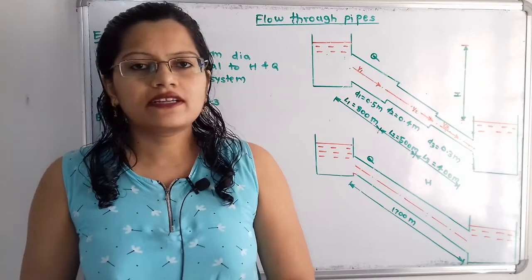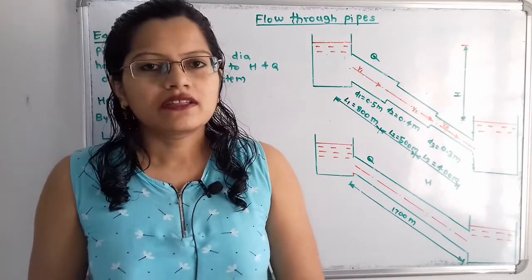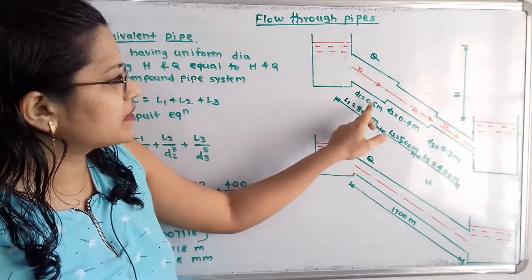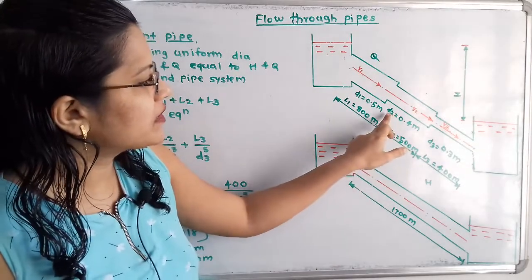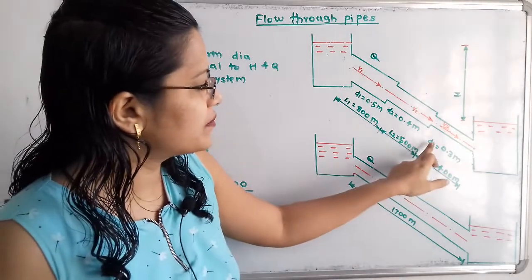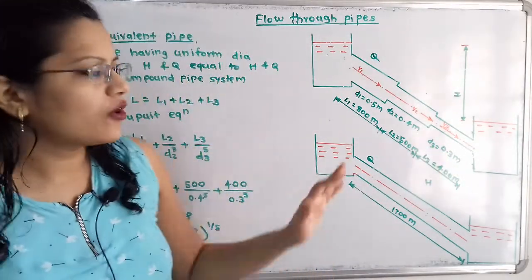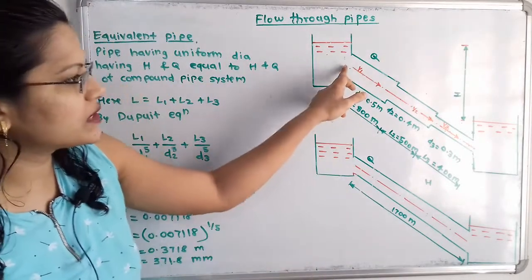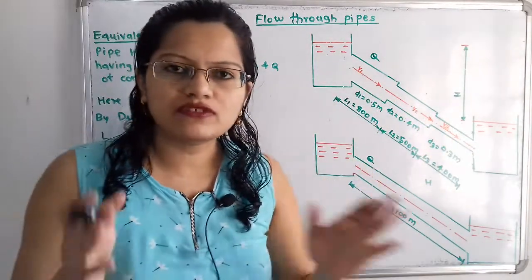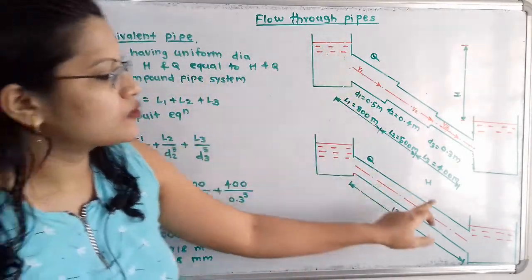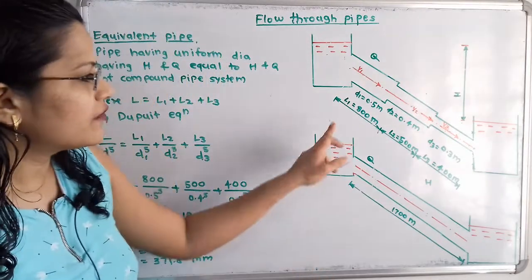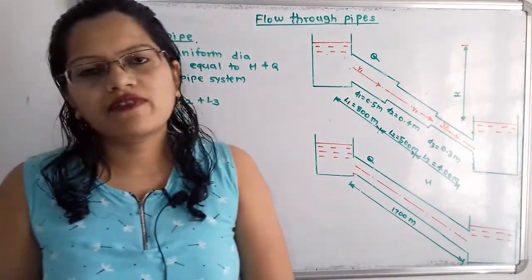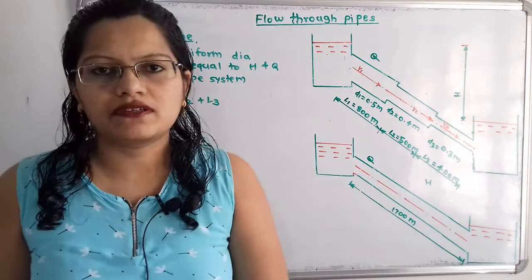Let us understand the diagram as per the given data. Here the compound pipe system is given with length l1 = 800 m and diameter d1 = 0.5 m, then length l2 = 500 m with diameter d2 = 0.4 m, and l3 = 400 m and diameter d3 = 0.3 m. For this compound pipe system an equivalent pipe is provided, meaning the discharge through the compound system equals the discharge through the equivalent pipe, and the loss of head is also the same. The equivalent pipe has uniform diameter and length L = 1700 m.